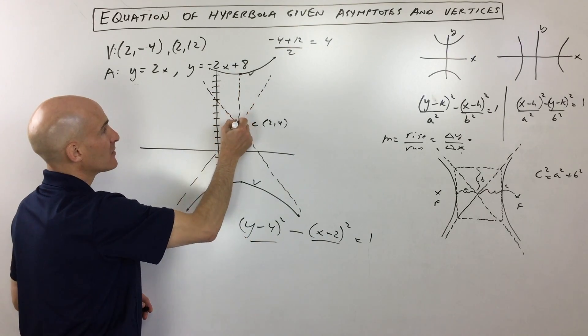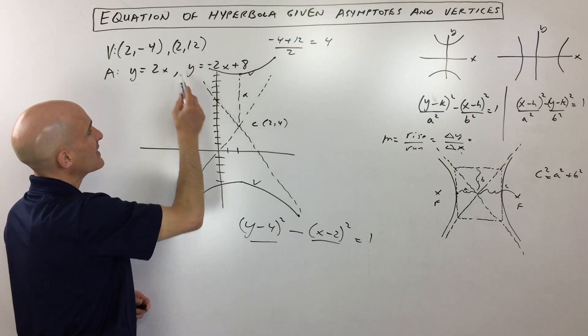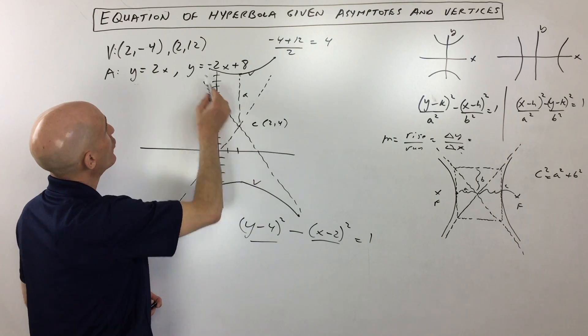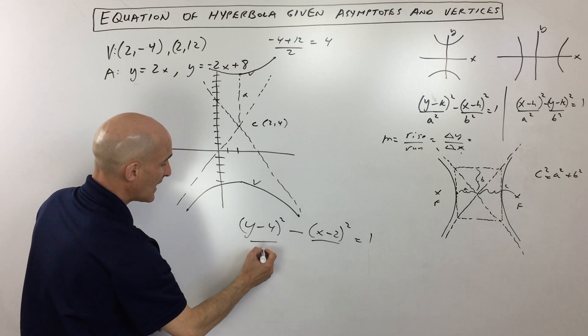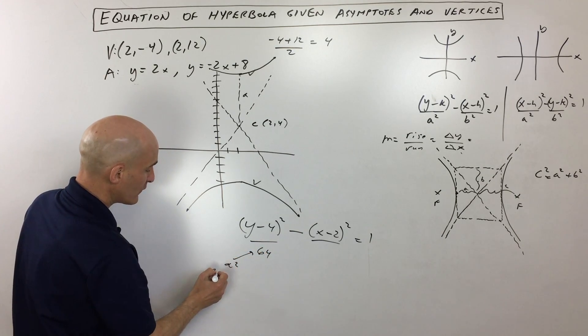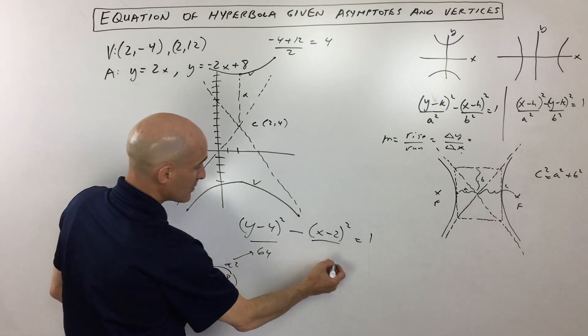Well remember, the distance from the center to the vertex, this distance right here is a. And we can see that that is how much? Well let's see, that's going to be 8 units. So you can see this is the difference between 4 and 12, so that's going to be 8 squared, which is 64. So that's our a squared and we figured out that a is equal to 8.